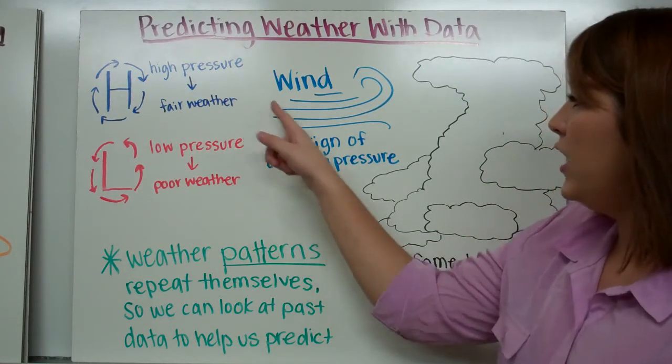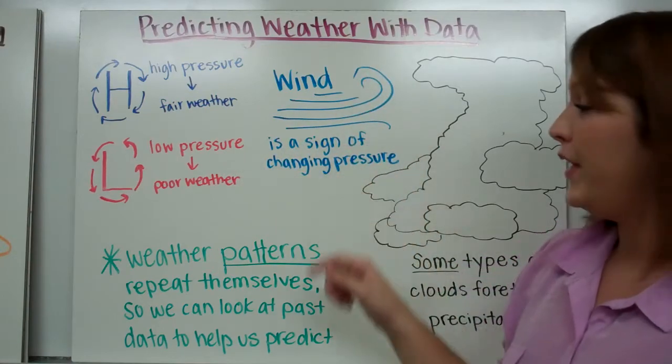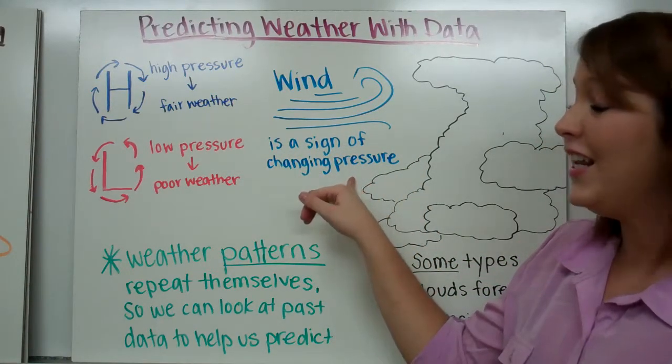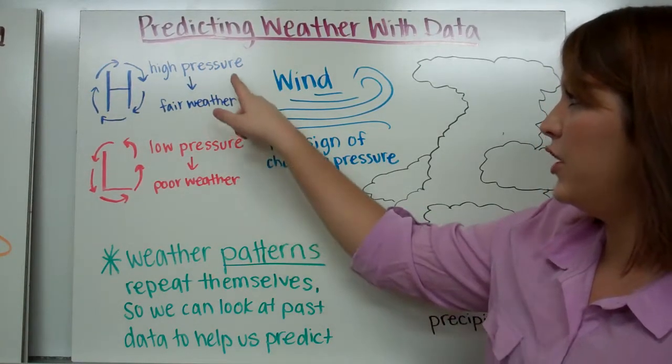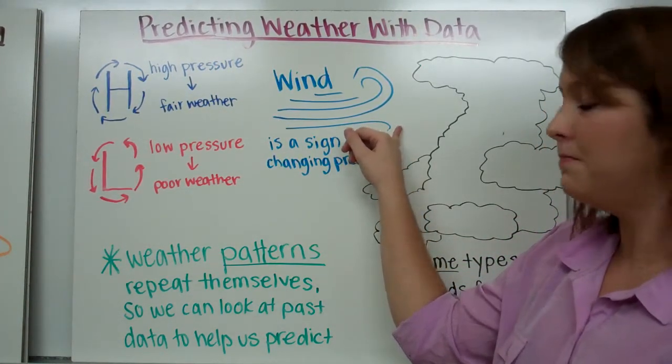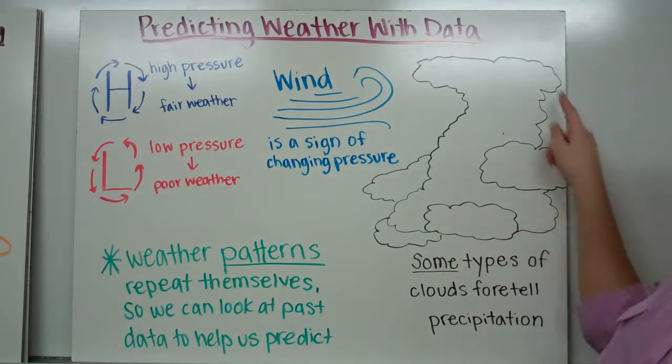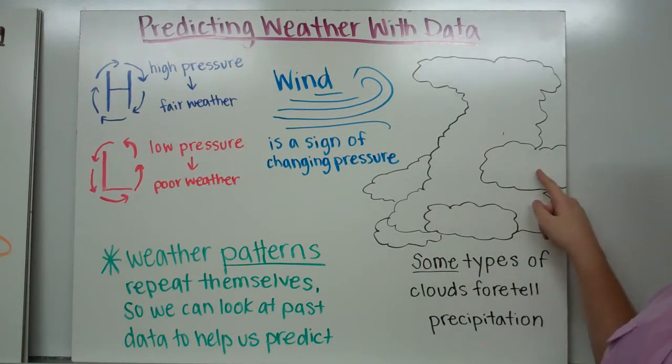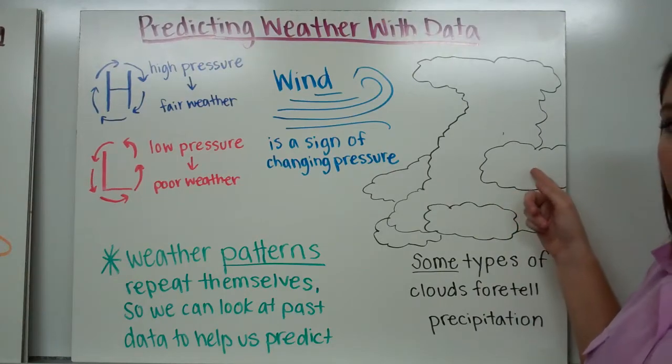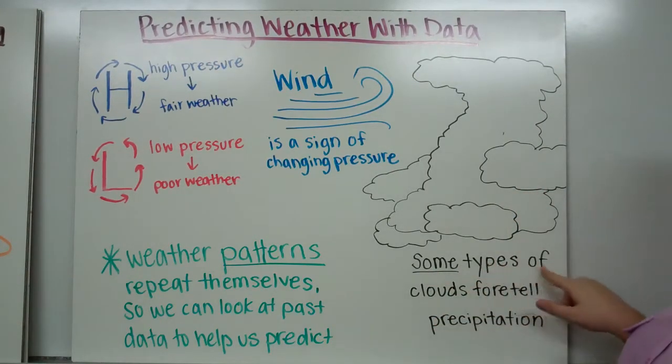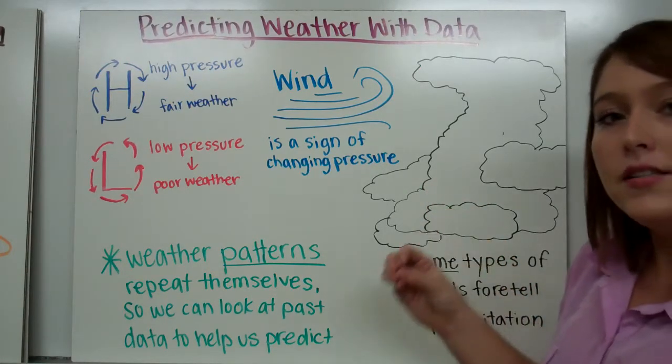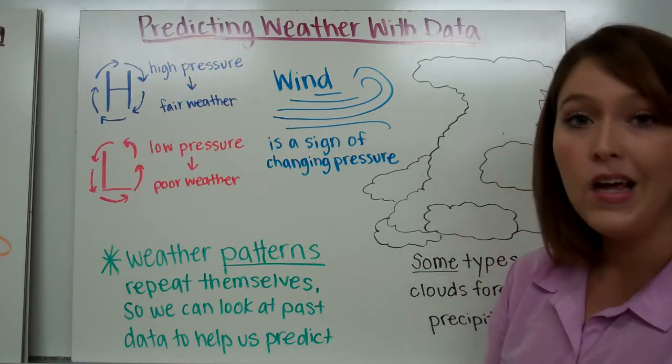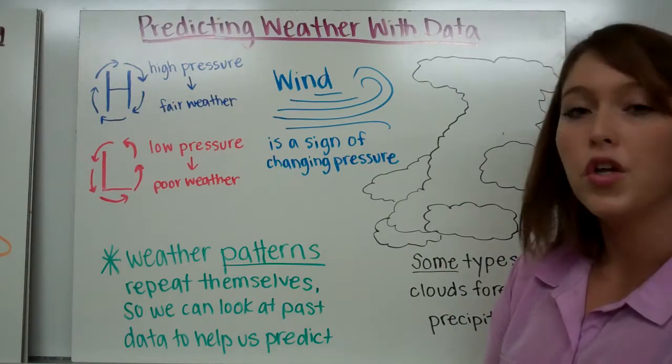When we have a change in wind direction or speed, that's a sign of changing pressure. That can lead either to good weather or bad weather depending on the trends of the pressure that we are observing with our wind. We can also observe cloud types and this can help us predict what kind of weather will come. Some types of clouds foretell precipitation. Some types of clouds are usually associated with certain types of rain, thunderstorms, drizzle, or snow.